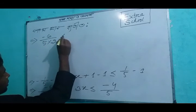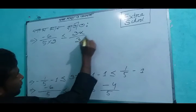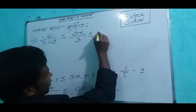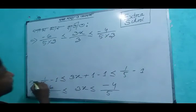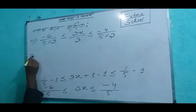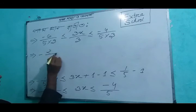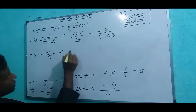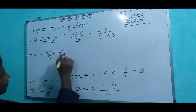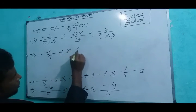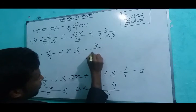This is equal to 3x divided by 3, less than or equal to minus 4 divided by 5 into 3. The 3s cancel out. Now we have minus 2 by 5, less than or equal to x, less than or equal to minus 4 by 6.